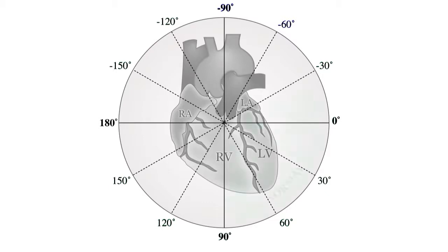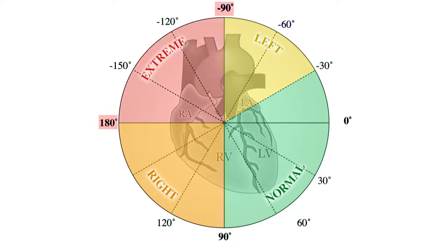The mean QRS is said to be normal when it lies between minus 30 and plus 90 degrees. There is left axis deviation when the axis is between minus 30 and minus 90 degrees. There is right axis deviation when the axis is between plus 90 and 180 degrees. An axis which lies between minus 90 and 180 is considered to be an extreme axis.